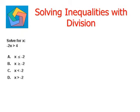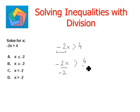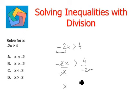Let's look at the next example. Solve for x, and we are given the inequality negative 2x is greater than 4. Here we have the coefficient negative 2, which is to be made 1. So we divide by negative 2 on both sides. This coefficient becomes 1. Now there is a slight change here — whenever an inequality is divided by a negative number, in this case negative 2, the sign in the center flips.